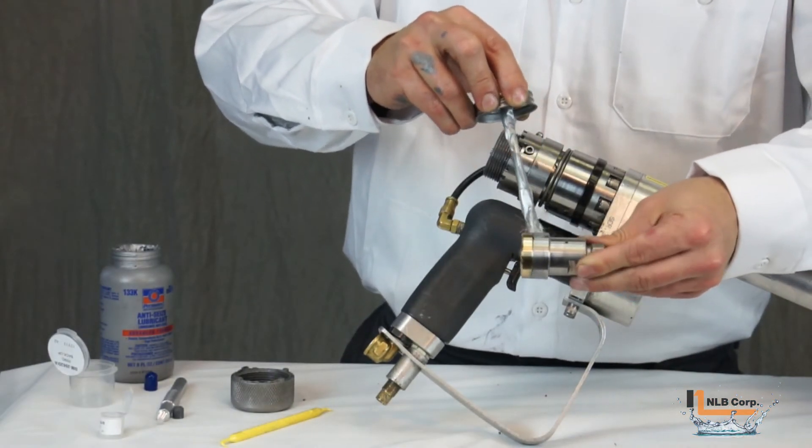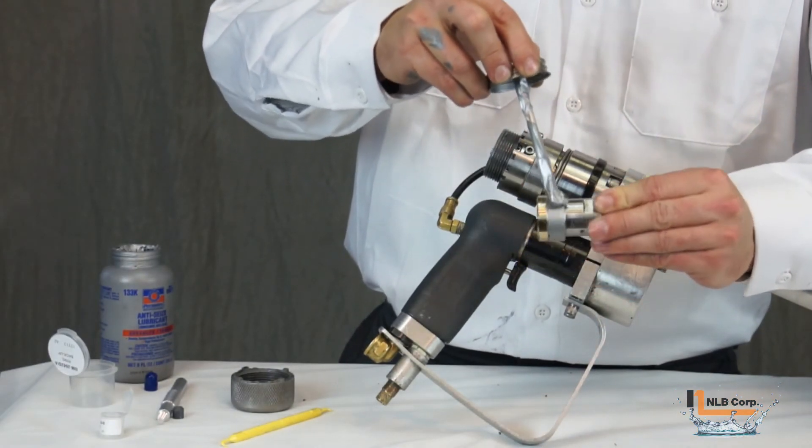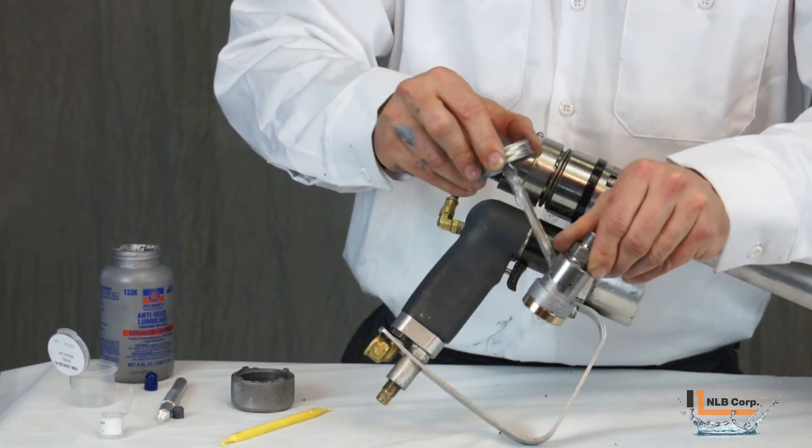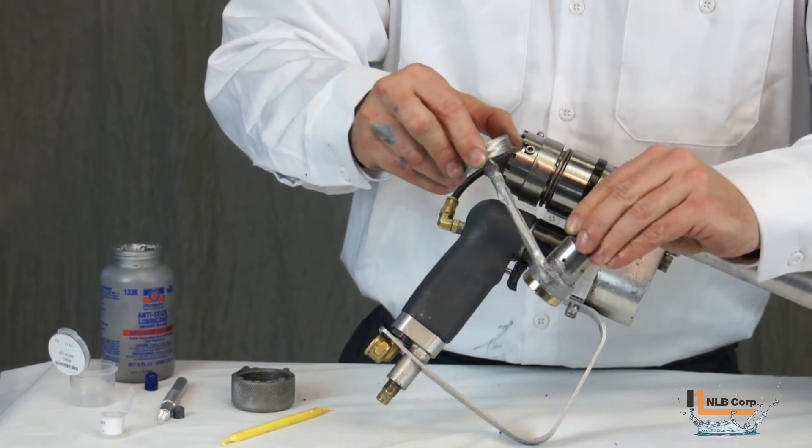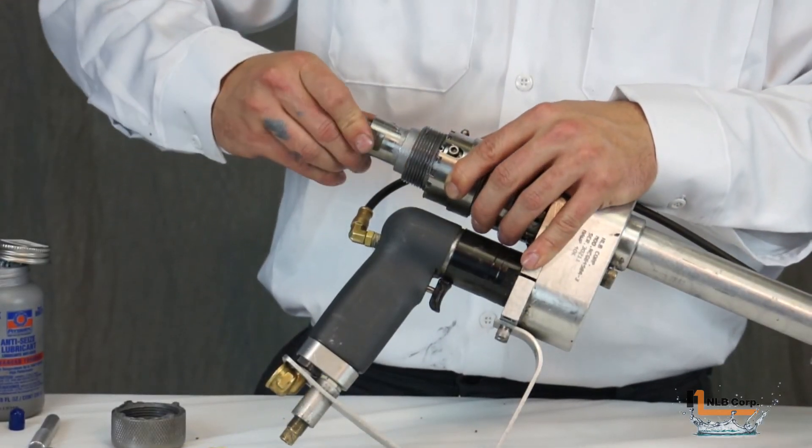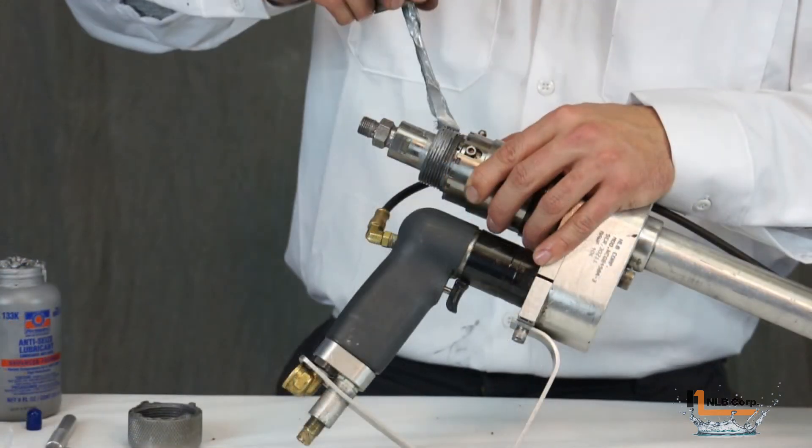Before installing this assembly back into the hand lance, apply anti-seize onto the assembly as shown. Then, slide the assembly into the hand lance and apply anti-seize onto the threads as shown.